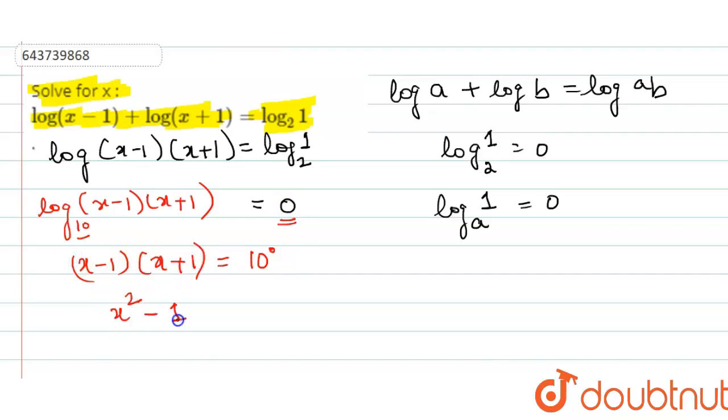Simplifying and applying the identity (a - b)(a + b) = a² - b², and 10⁰ = 1, it will become x² = 2.